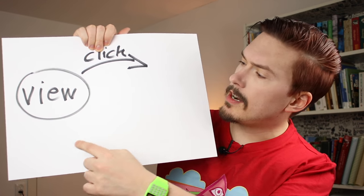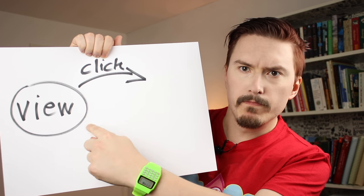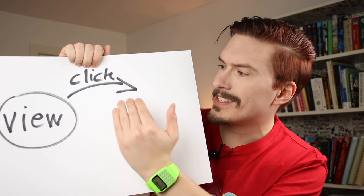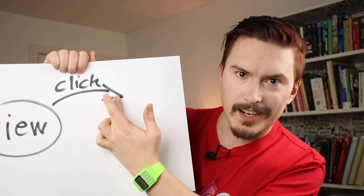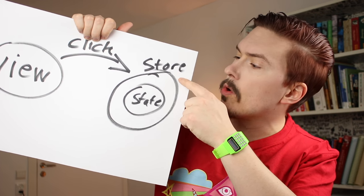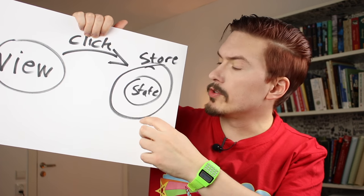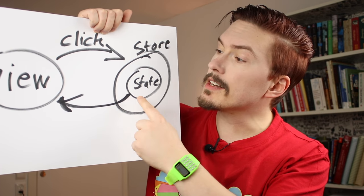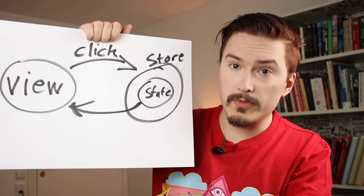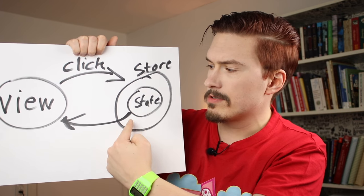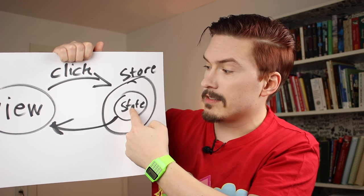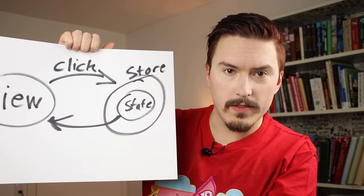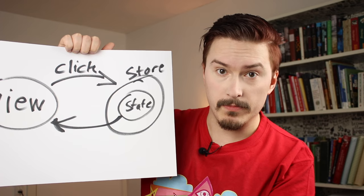Imagine an application where you have a view and there's some button in that view. That button will not be allowed to change anything in the view itself, or even change any state itself. It will dispatch a click event and it will end up in the store, which is responsible for doing the actual manipulation of the state. Whenever the state updates, the entire view will re-render based on the state. State change only happens because an action went this way, and the view is only updated from the state changes.